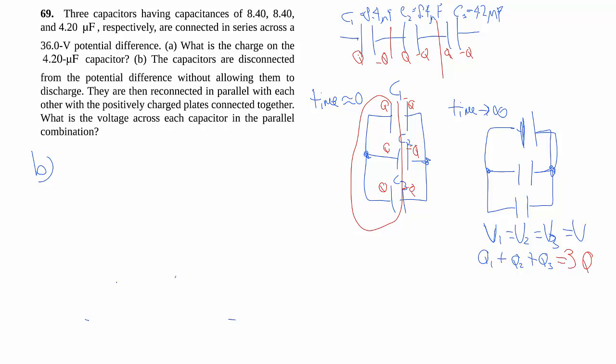So to do this, all we really need to do is to reduce this parallel bit into a single capacitor. So because we're in parallel, we simply add the three capacitances, which is 8.4 plus 8.4 plus 4.2 microfarads, giving a total of 21 microfarads.